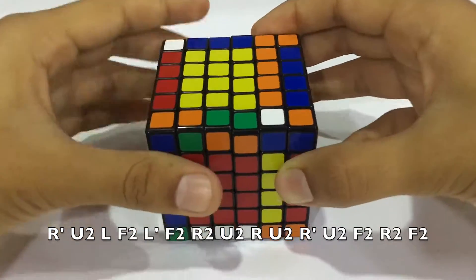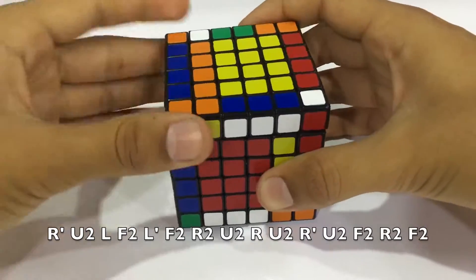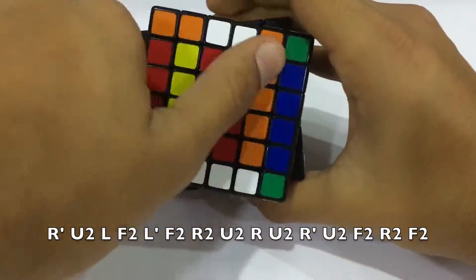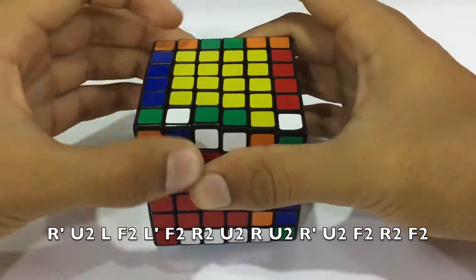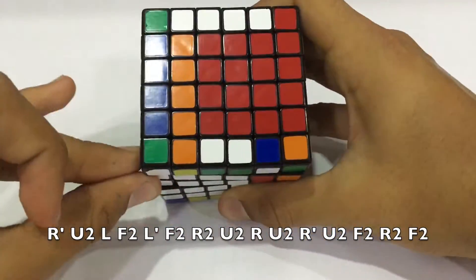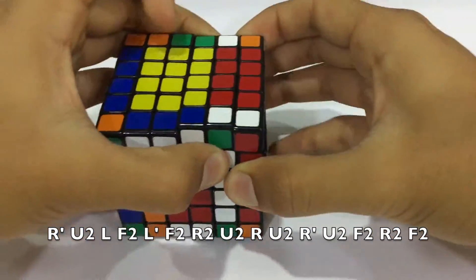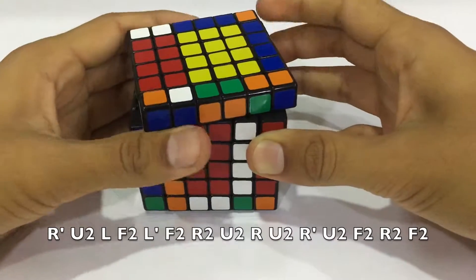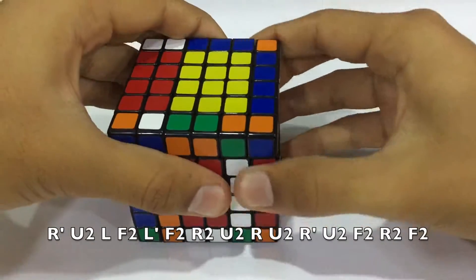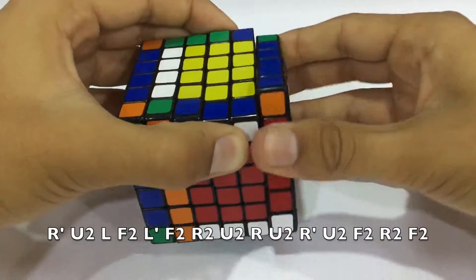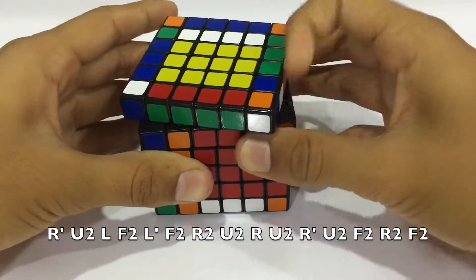Right down, U2, left down, F2, left up, F2, R2, U2, R, U2, R, U2, R inverted, U2.